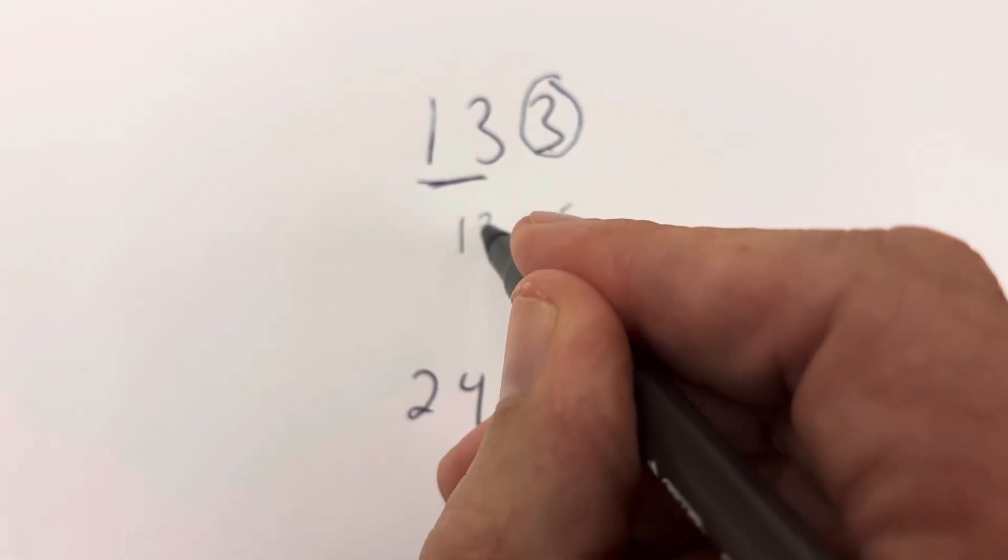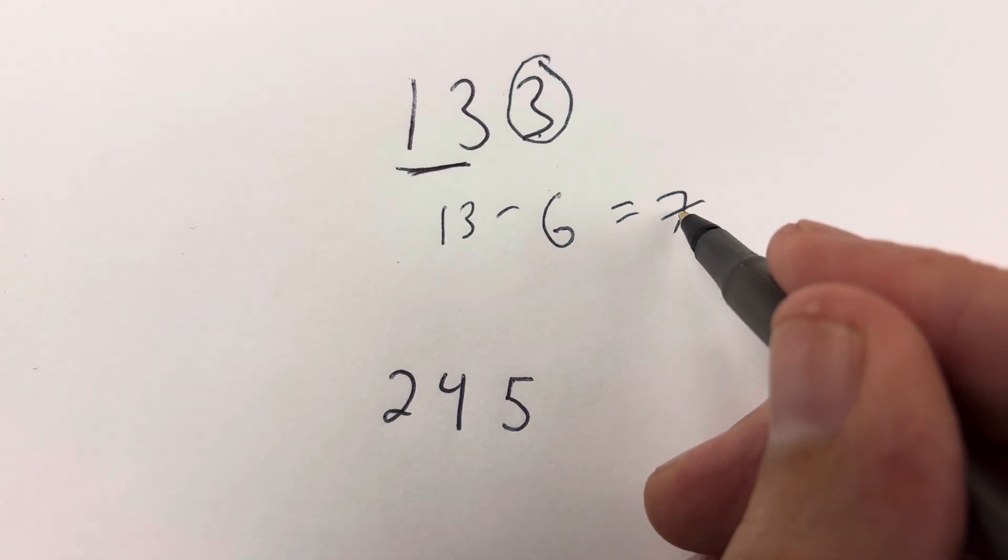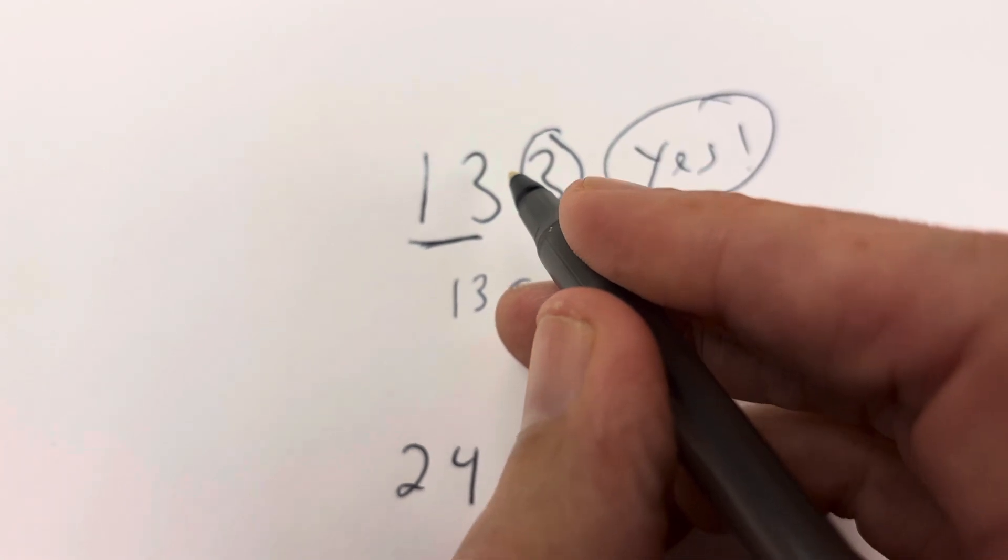Then you write what's before it and subtract it. So 13 minus 6 is 7. Is 7 divisible by 7? It is. So this is yes. 133 is divisible by 7.